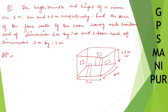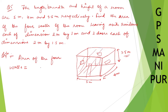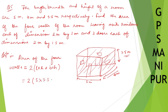The area of the four walls equals 2 into (length × height + breadth × height). We do not take the floor or the roof. So, area of four walls = 2 × (5 × 3.5 + 4 × 3.5), where length is 5 meters, height is 3.5 meters, and breadth is 4 meters.